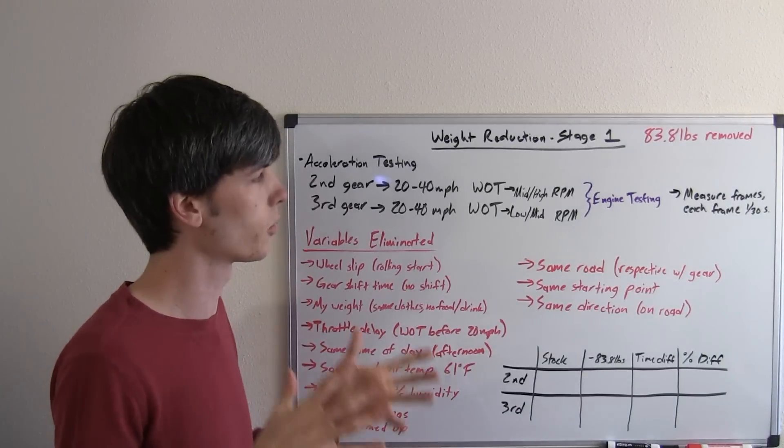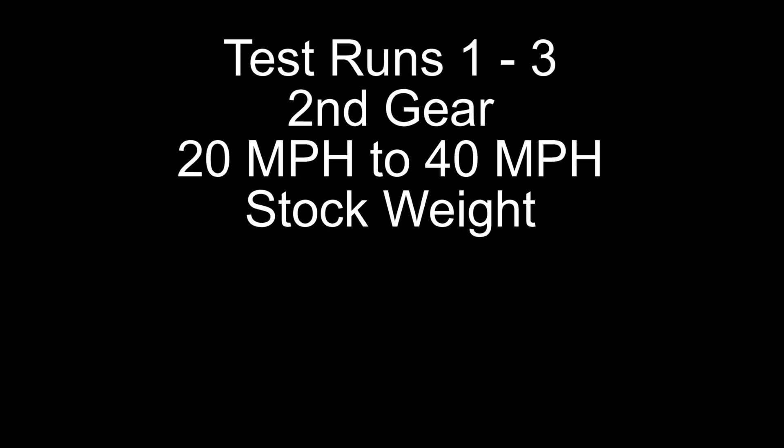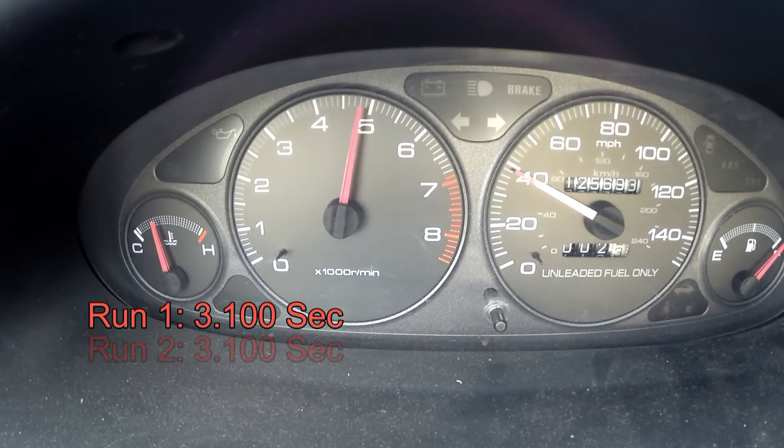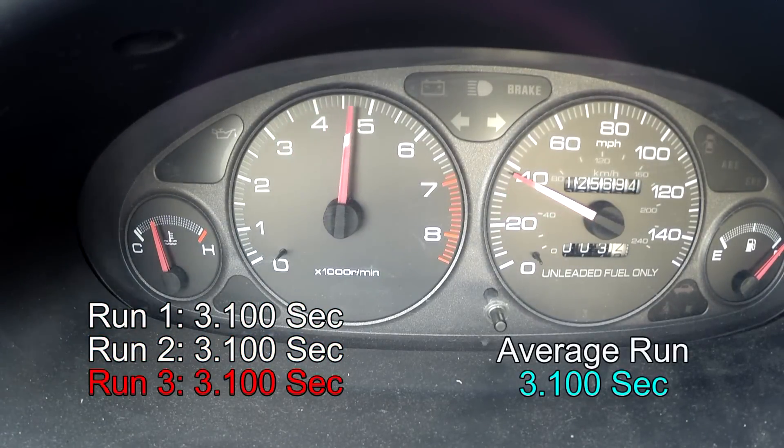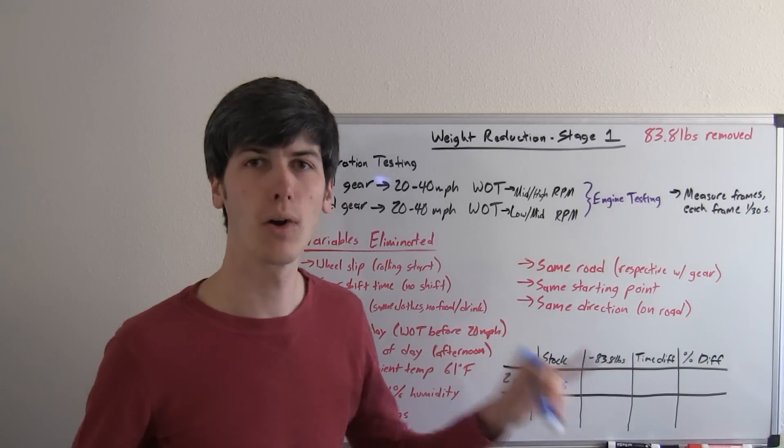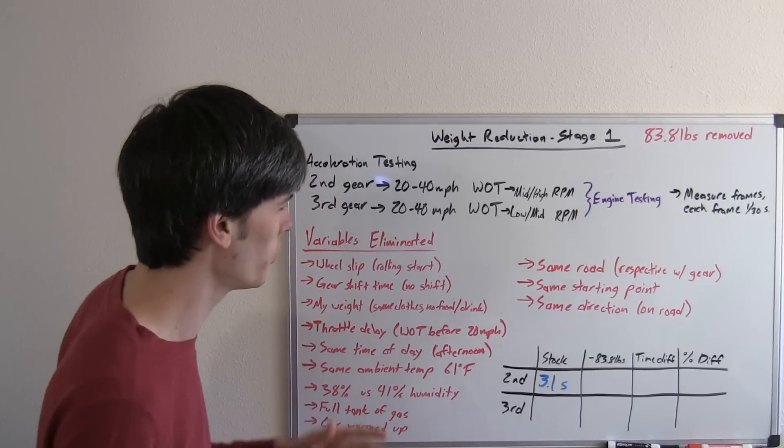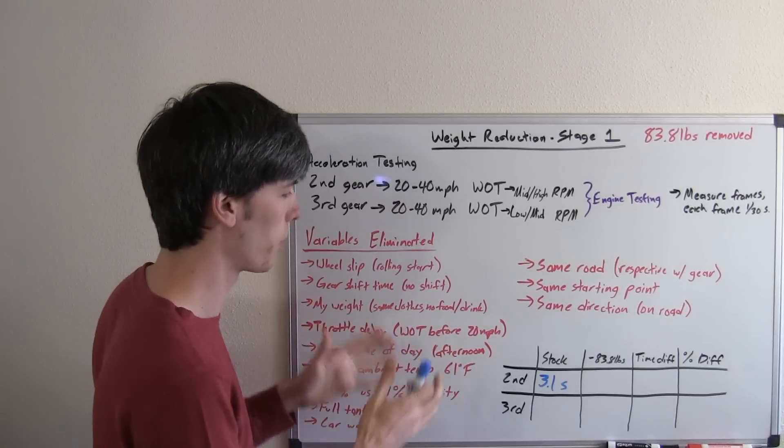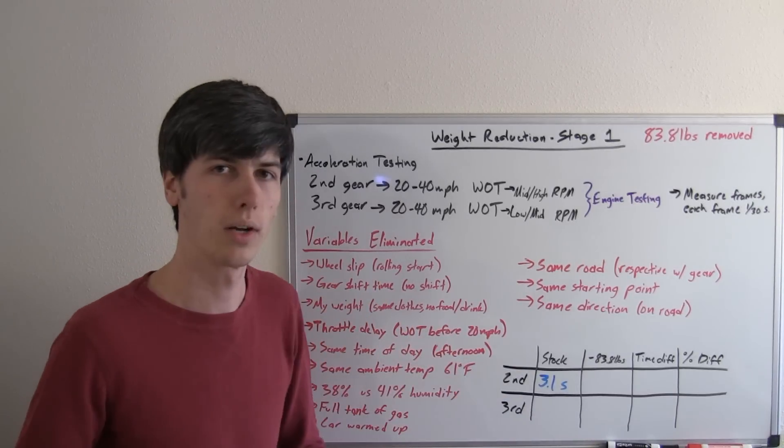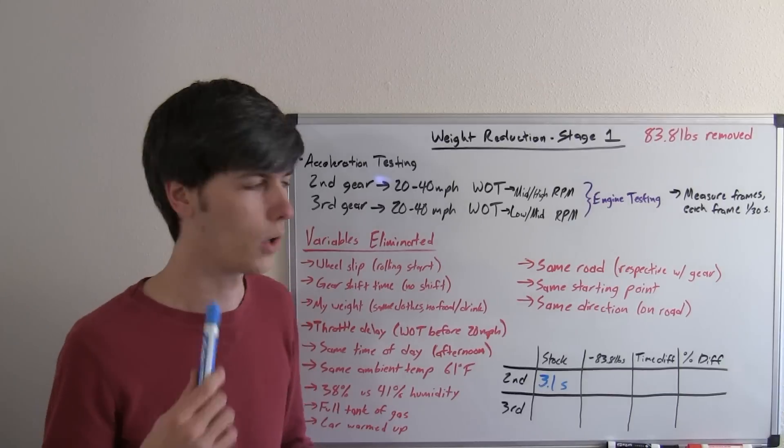So let's check out the first test. This will be second gear, accelerating from 20 to 40 before removing any weight. So that may have been a bit fast to watch, but every run was exactly 3.1 seconds. So the test was incredibly repeatable, and that's something kind of hard to do. And it's showing that all of these factors that I kind of put in designing the test are actually working because the test is repeatable. We're not getting differences in time with the stock run from second gear, and it's pretty incredible to me that it was the same 3.1 seconds for all three runs.